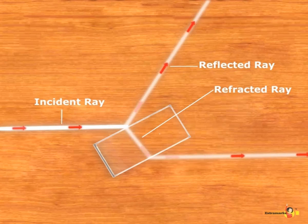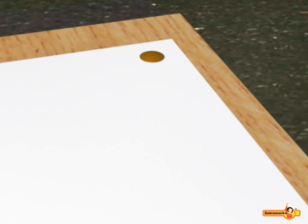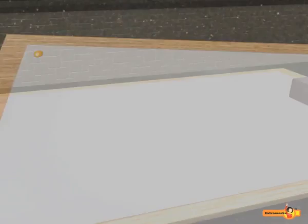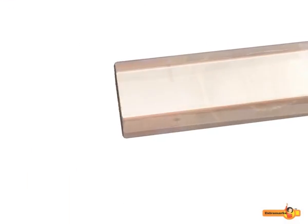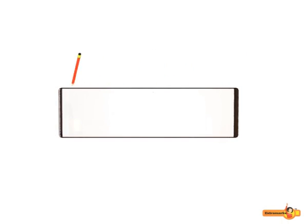Let's understand the phenomenon with the help of an experiment. Place a sheet on a wooden board and fix it with the help of board pins. Place a rectangular glass slab on the paper sheet. Trace the boundary of the glass slab.